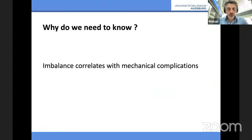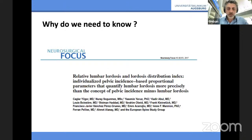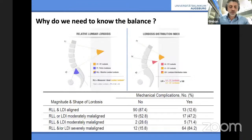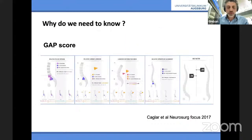Why do we need to know this? Because it correlates with mechanical complications. The first studies about sagittal balance told us that certain parameters should correlate with quality of life — well, it doesn't. It correlates with mechanical complications and not so much with clinical outcome. Looking at patients aligned with regards to relative lumbar lordosis, they have mechanical complications in 12% of cases. If they are severely malaligned, the complication rate goes up to 85%.